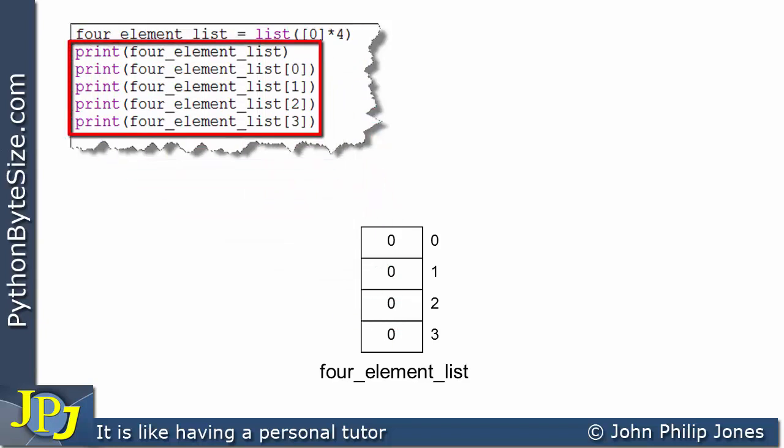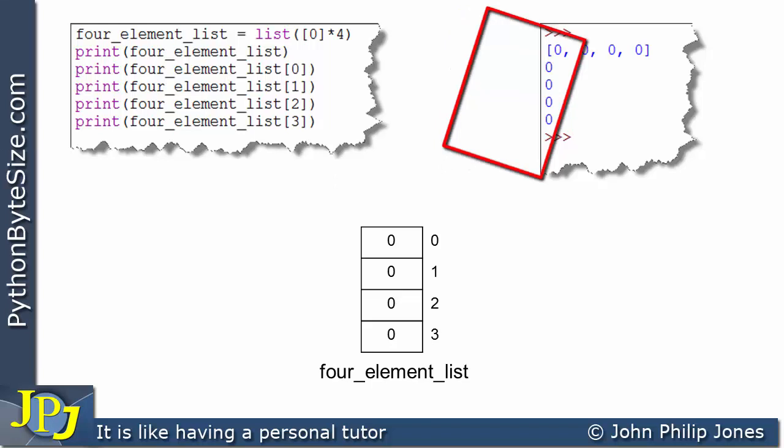Now these lines, they're identical to the ones we saw in the last program. So what they're going to do is simply output the list in its entirety and then each element of the list in turn, as you can see here.